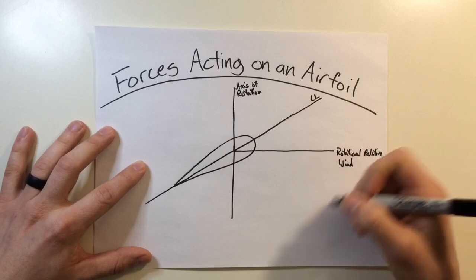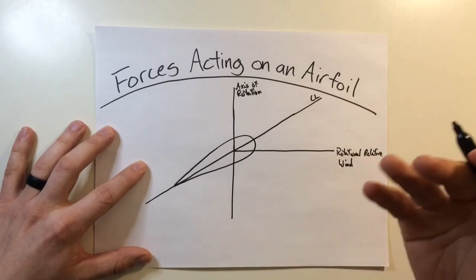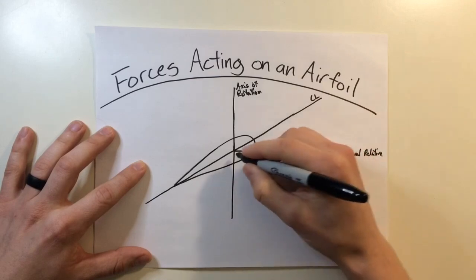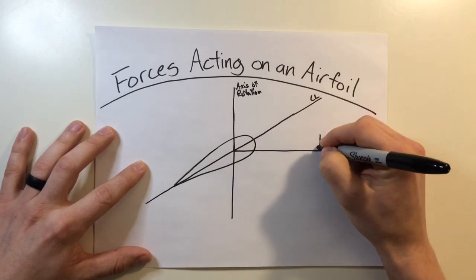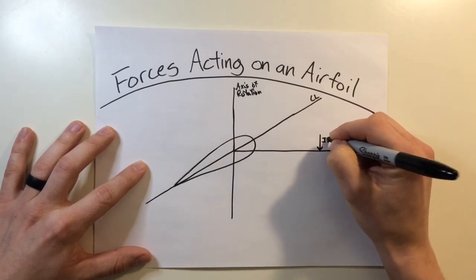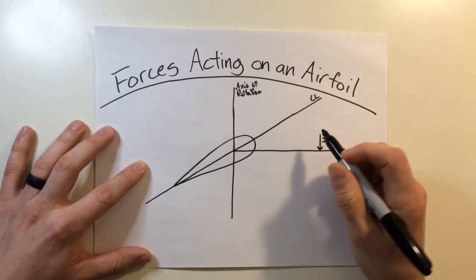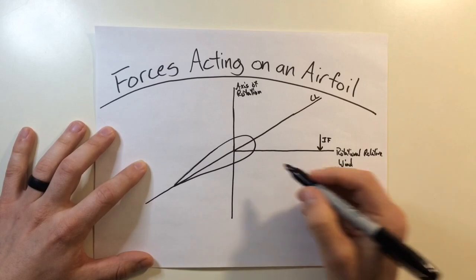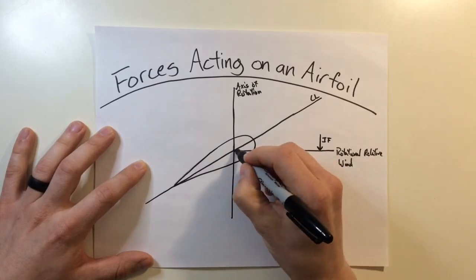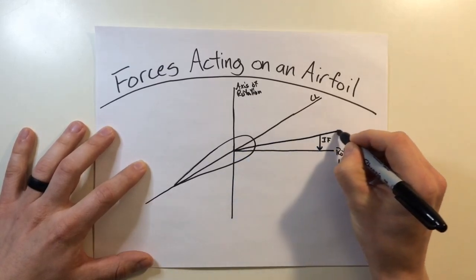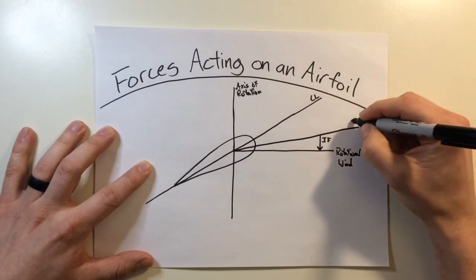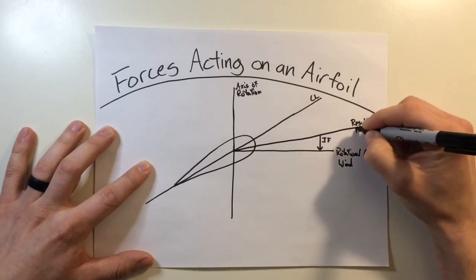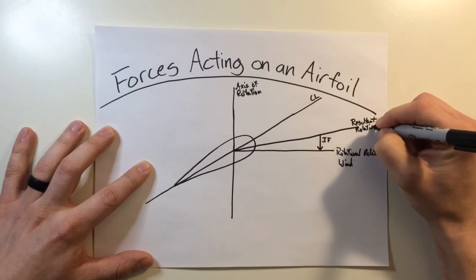So the blades are actually experiencing induced flow or downwash, induced drag, there's a lot of different names for it. But this acts on the airfoil something like this. We're going to have our induced flow. So what's left over from this is going to give us a resultant relative wind. So if we were to draw this from right here, intercepting that, we're going to have our resultant relative wind.